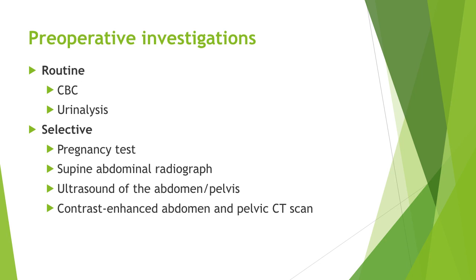Diagnosis of acute appendicitis is primarily based on history and physical examination, but preoperative investigations are helpful to rule in or rule out other differentials. The total WBC count is almost always increased above 10,000 in most patients, but a very high WBC count of more than 20,000 suggests complicated appendicitis. Plain film has very little utility and is non-specific in findings, but in rare cases may visualize fecaliths.